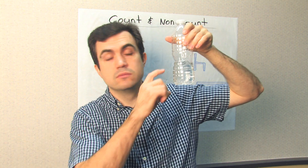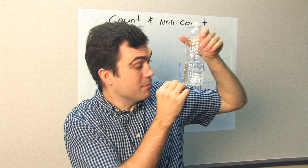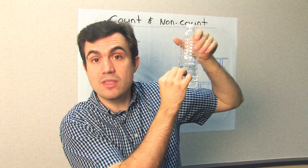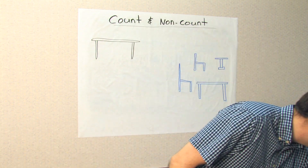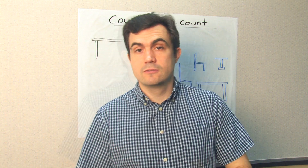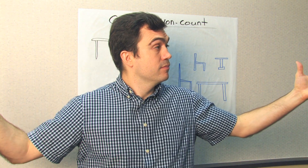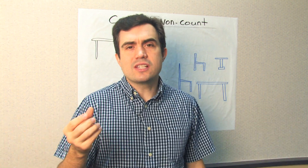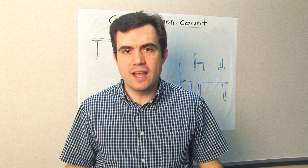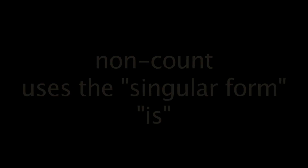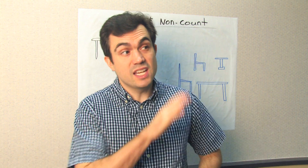How much water is in the bottle? A little. How many milliliters are in the bottle? That is countable — if the milliliters are marked on the bottle, I could count. But how much water? This is good practice. Another example: how much light is in the room? Plenty. There is plenty of light. Notice I'm using the singular 'is' — there is plenty of light in the room. There is plenty of air in the room. We're using the singular, not the plural. How much light is in the room? A lot of light. It's very bright.